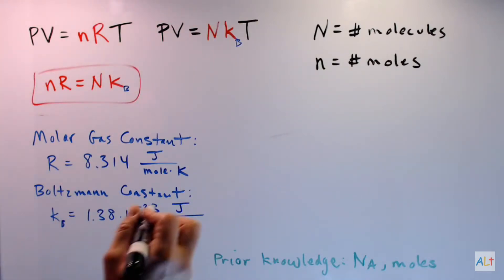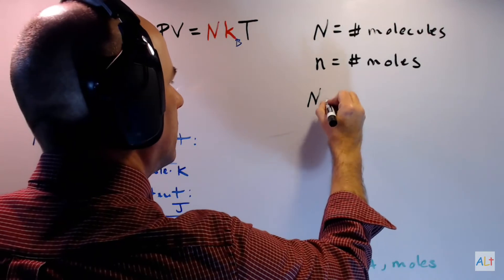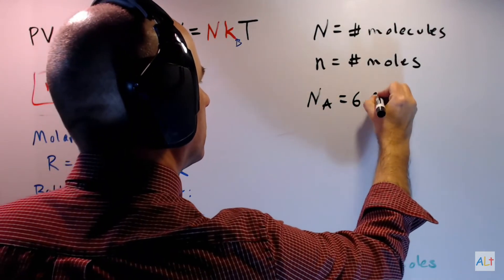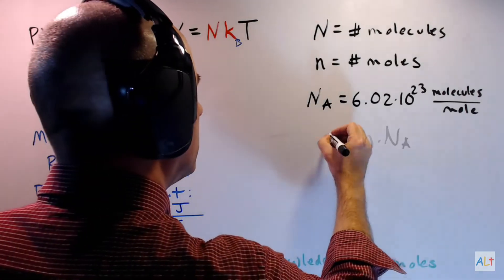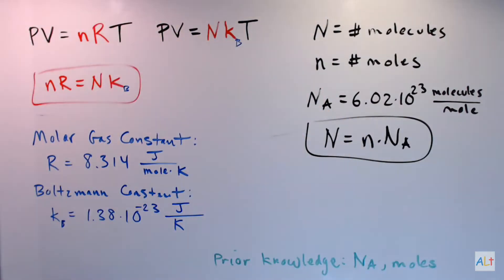Now to make sense of all of this, we need to remember Avogadro's number: 6.02 times 10 to the power of 23 molecules per mole.